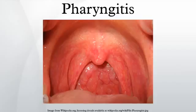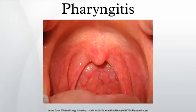A number of different bacteria can infect the human throat. The most common is group A Streptococcus; however others include Streptococcus pneumoniae, Haemophilus influenzae, Bordetella pertussis, Bacillus anthracis, Corynebacterium diphtheriae, Neisseria gonorrhoeae, Chlamydophila pneumoniae, and Mycoplasma pneumoniae.